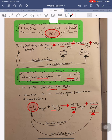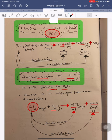In NaClO₃, Na is +1 and each O is -2, giving a total oxygen contribution of -6. So: +1 + Cl + (-6) = 0, which means Cl = +5. Therefore in NaClO₃, Cl has an oxidation state of +5. Since Cl went from 0 to +5, it is undergoing oxidation.